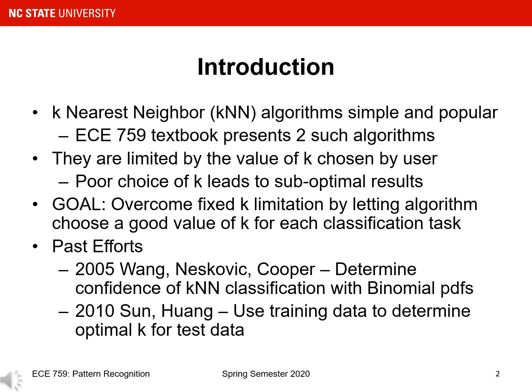There have been multiple past efforts to develop adaptive KNN algorithms. One such effort was published in 2005 and used binomial PDFs to specify the confidence of a KNN classification. Another effort published in 2010 used the training data to determine the optimal k to use in the classification task for each test data point.